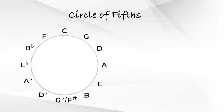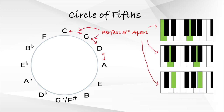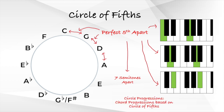The circle of fifths is a way of organizing the 12 chromatic pitches as a sequence of perfect fifths. A perfect fifth interval is the distance between the first note and the fifth note of either a major or minor scale. If you're not that familiar with scales, two notes that are a perfect fifth apart are seven semitones apart. Simply put, the circle of fifths is just a way we arrange our 12 notes on the piano, and we can expand on this to create some really cool sounding chord progressions.